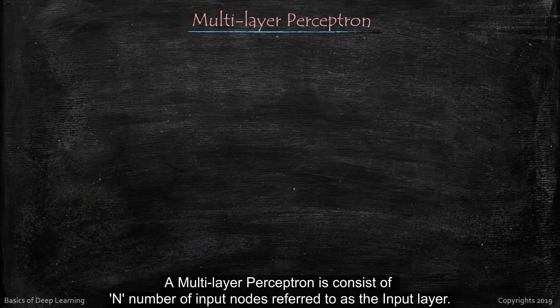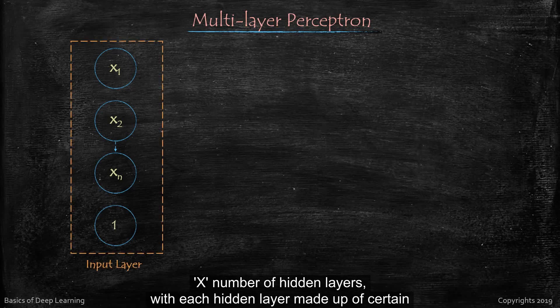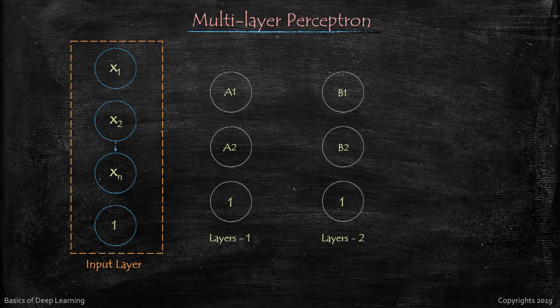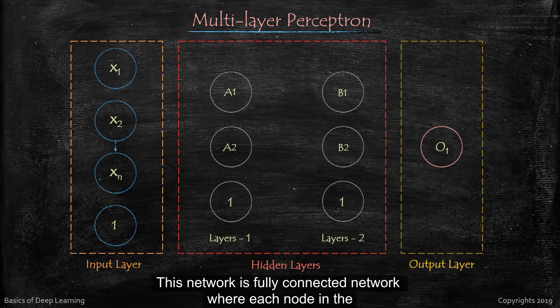A multilayer perceptron consists of N number of input nodes referred to as the input layer, X number of hidden layers with each hidden layer made up of certain number of processing nodes. So these are the hidden layers and an output layer consists of one or more output nodes. This network is fully connected network.